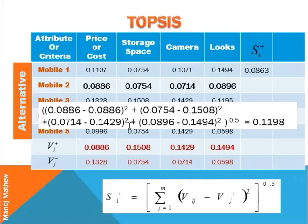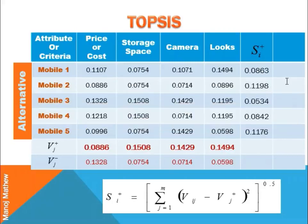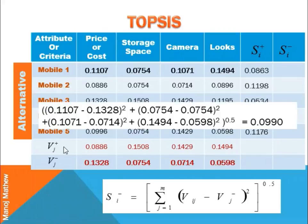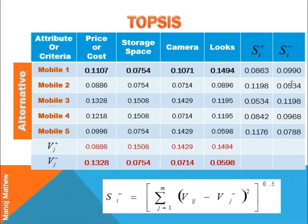Similarly, I calculated the Euclidean distance from the ideal best for the second alternative, Mobile 2, which comes out to be 0.198. We can calculate all the Euclidean distances from the ideal best in the same way. Next, we calculate the Euclidean distance from the ideal worst — the difference is squared and summed, and the square root is taken to get 0.0990 for Mobile 1.